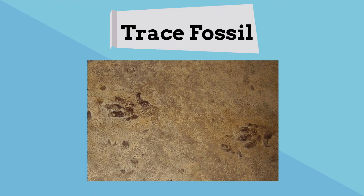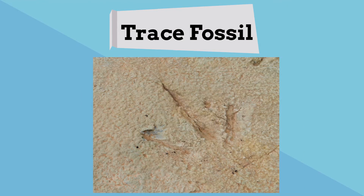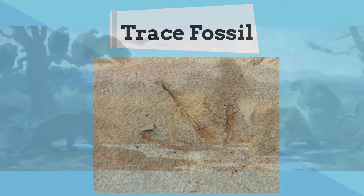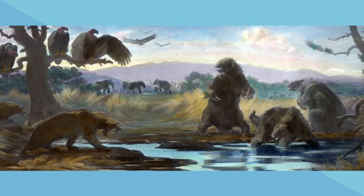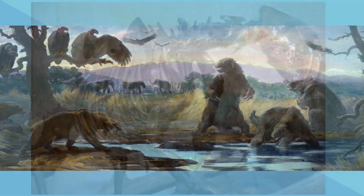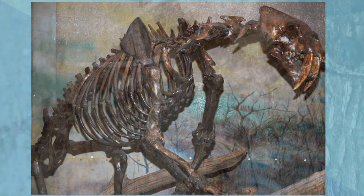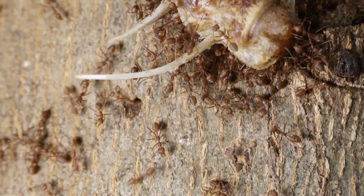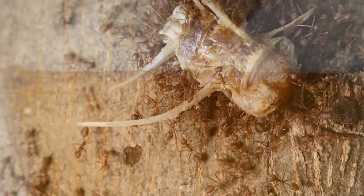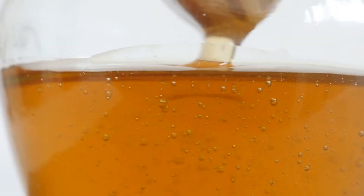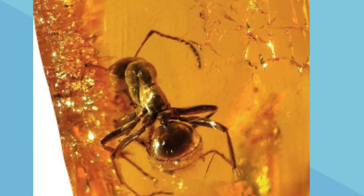Finally, you may have a copy of the original material. This may happen when you have a tiger, for example, that falls into a tar pit and for thousands of years it is preserved. Or you may get an insect that is covered with amber and it will remain in this amber for a very long time.